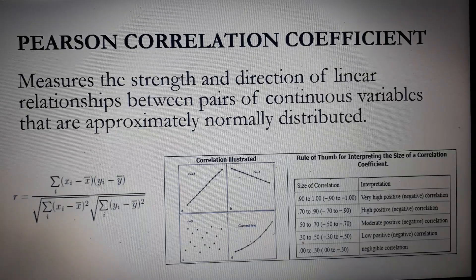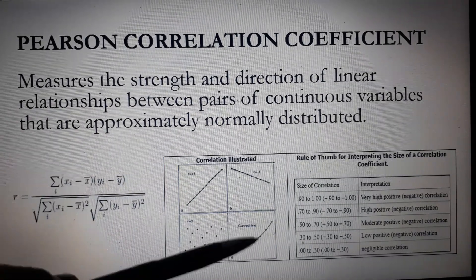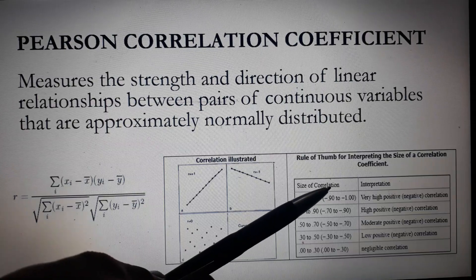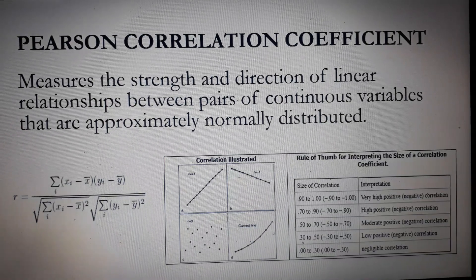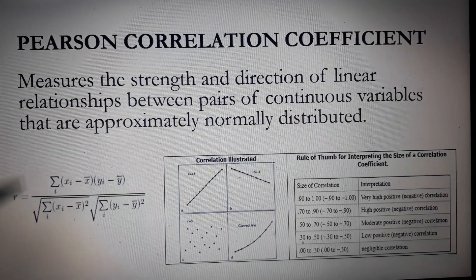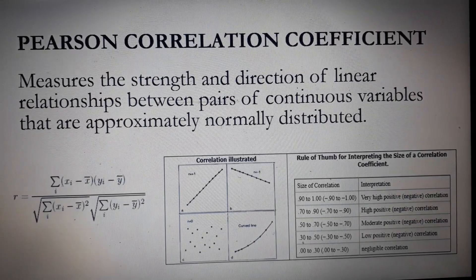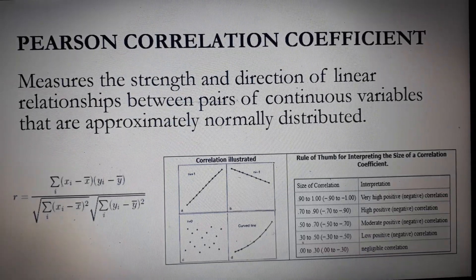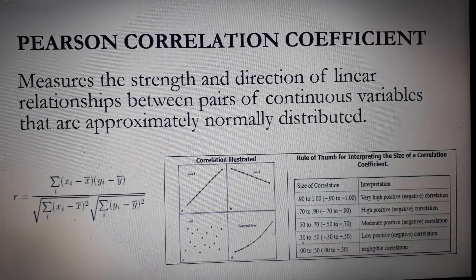The illustration consists of scatterplots and the rule of thumb used for interpreting the size of R. Scatterplots are presentations of values of X and Y using the Cartesian coordinates.